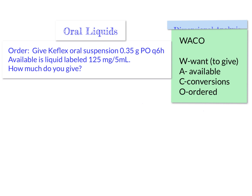First, we need to follow the steps of dimensional analysis and decide what we want to give. We're giving an oral suspension in milliliters, so we start with milliliters — put that on top, that's key. Make sure you put what you want on top. Now I look at my problem: available is 125 milligrams per 5 mL, so I put 5 mL up top and 125 milligrams on the bottom.